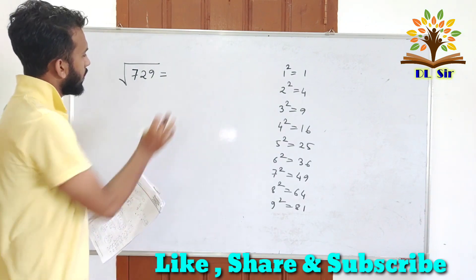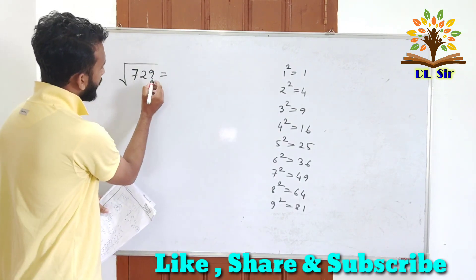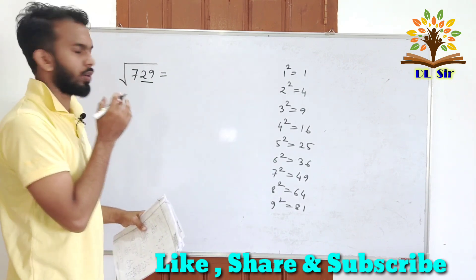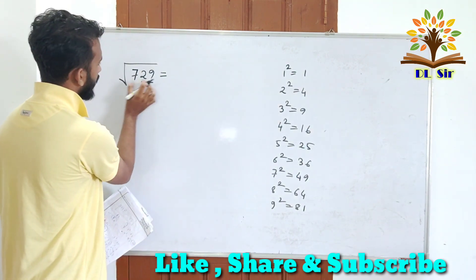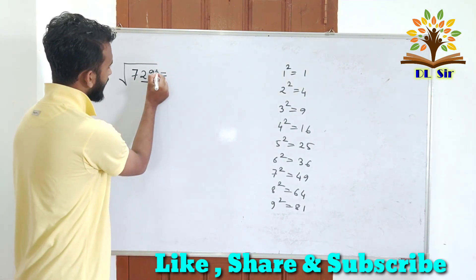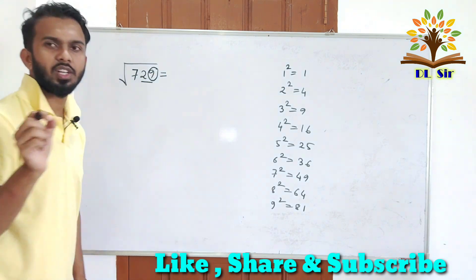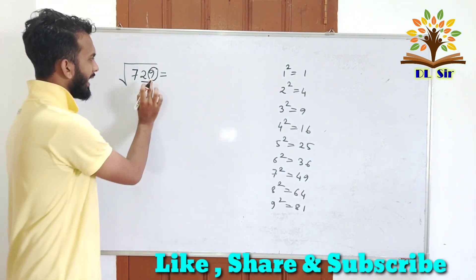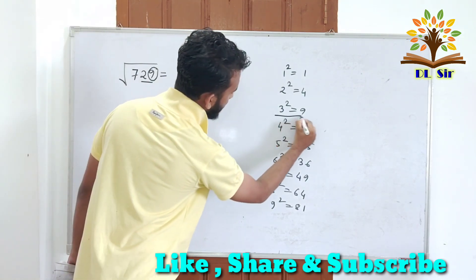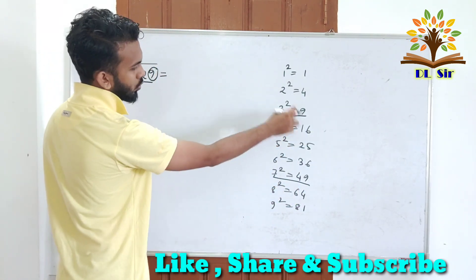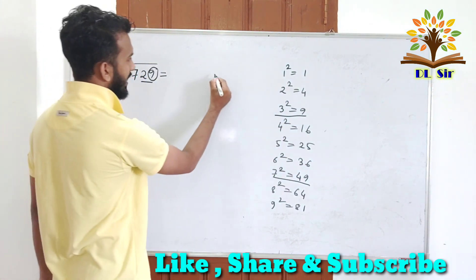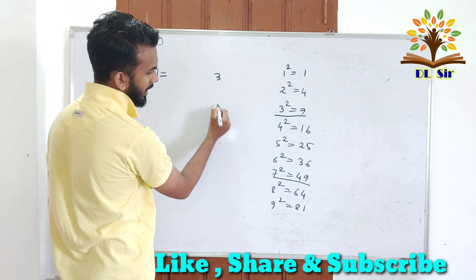This is the square root of the exam. Let's start the first number. Let's go to the right side of the exam. Let's start the second number. This is the second number. This one is the second number. 9 square number is 2 that means our each square root is either 3 or 7.